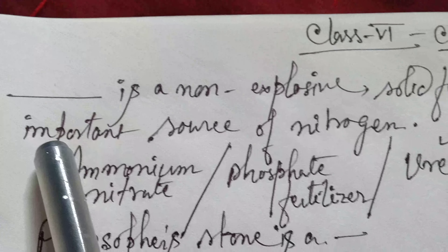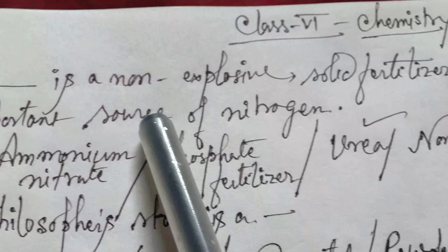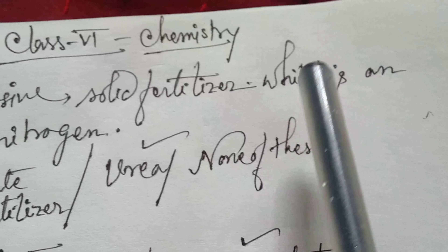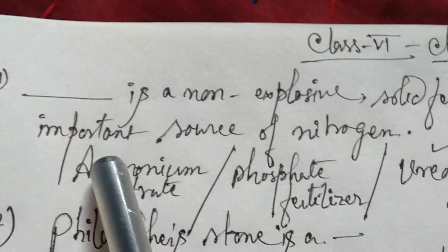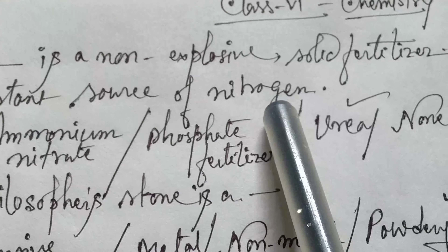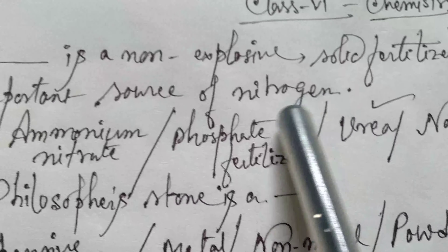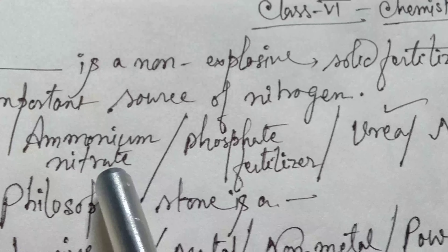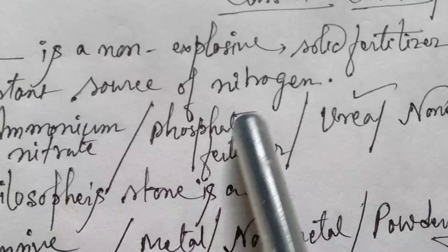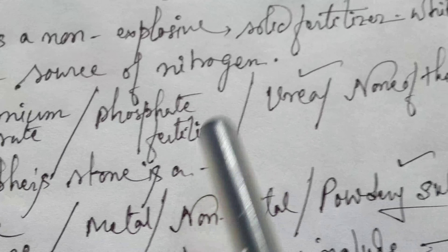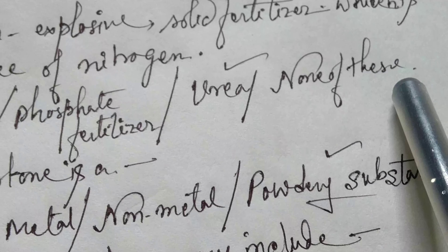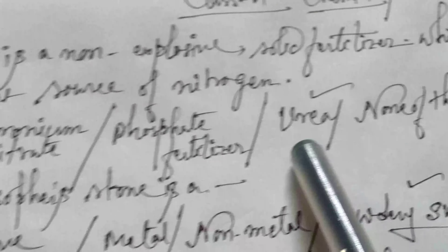Question one: dash is a non-explosive solid fertilizer which is an important source of nitrogen. Options are: ammonium nitrate, phosphate fertilizer, urea, or none of these. The answer is urea.